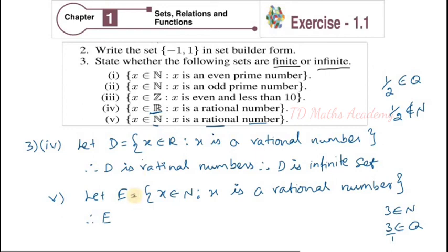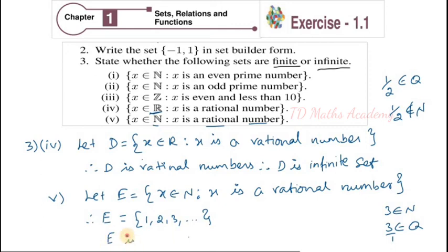Therefore, E is natural numbers. Natural numbers can be listed out; rational, irrational, and real numbers cannot be listed out in tabular form. Writing E: E = {1, 2, 3, dot dot dot}. Natural numbers have infinite elements. Therefore, E is an infinite set.